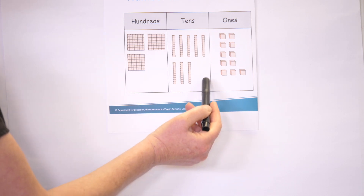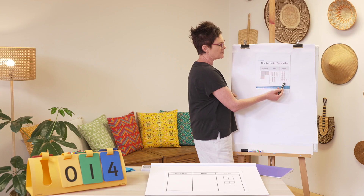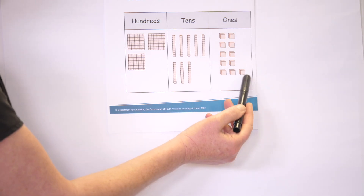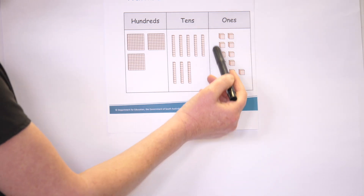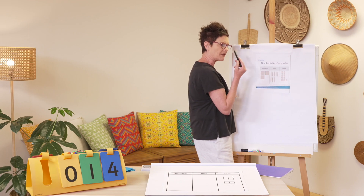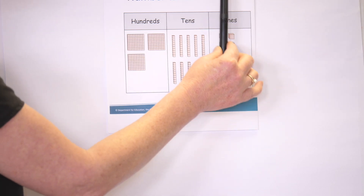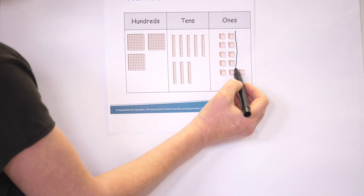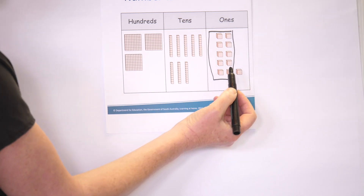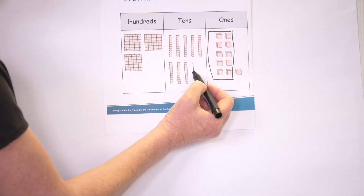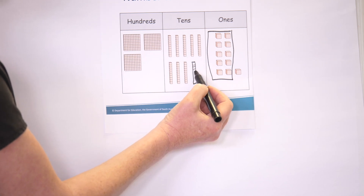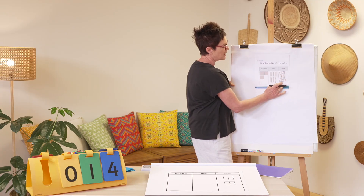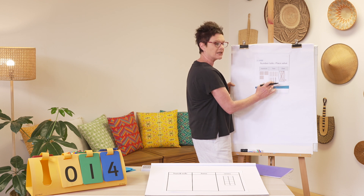We have three hundreds, we have a five and a three which give me eight — eight tens — and something a little bit unusual: we have eleven ones. Now let's think about that. I know that ten of these will make one of those, so I'm going to take those ten ones and make one ten. Ten ones make one ten.